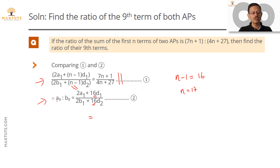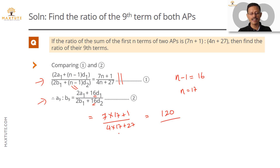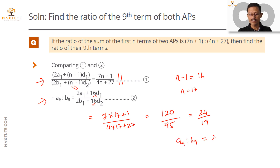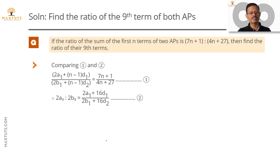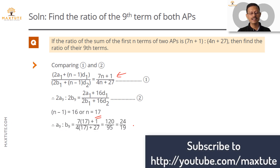Plugging n = 17 into the ratio (7n+1)/(4n+27): we get (7×17 + 1) / (4×17 + 27) = (119 + 1) / (68 + 27) = 120/95. Both terms are divisible by 5: 120÷5 = 24, 95÷5 = 19. Therefore A9 : B9 = 24 : 19. That is the required ratio.